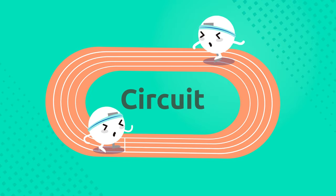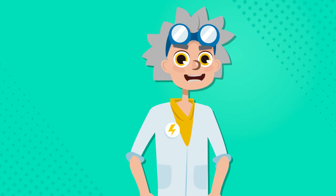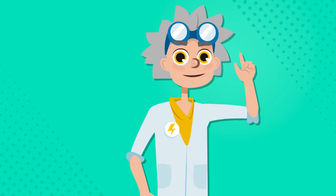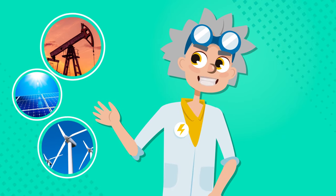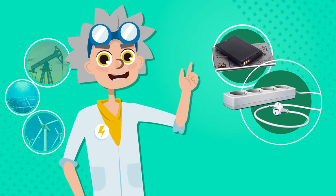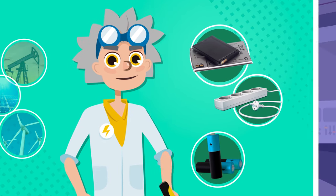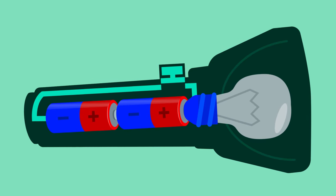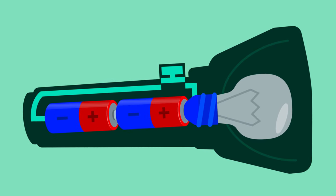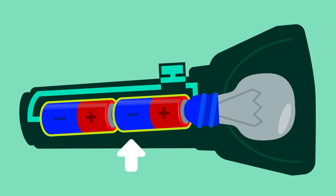Circuits have two parts: the first is the source of electricity, which we discussed in the previous video, and the second corresponds to the materials that allow the flow of electric charges. Here we see an electric circuit inside this flashlight — there are two batteries, which are the source of electricity, and the wires that carry the electric charge to the bulb.